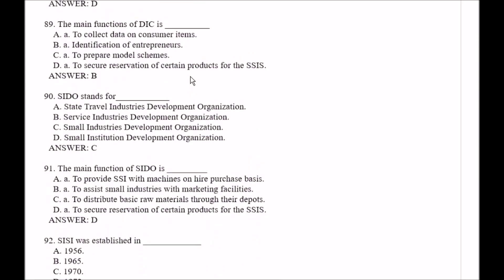Question number 89: A main function of TIIC is — Option A, to collect data on consumer items; Option B, identification of entrepreneurs; Option C, to prepare model schemes; Option D, to secure reservation of certain products for the SSI sector. The right answer is Option B, identification of entrepreneurs.